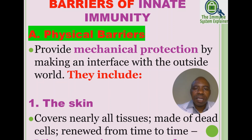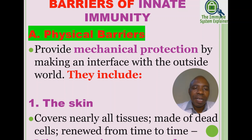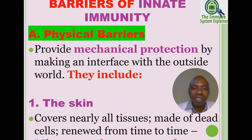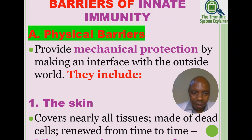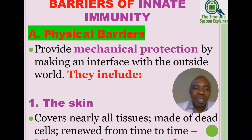Now let's begin the discussion about the barriers of innate immunity. The first umbrella term is physical barriers. Before a foreign antigen can be engaged by innate immune cells — such as macrophages, dendritic cells, neutrophils, basophils, eosinophils, natural killer cells, and mast cells — we have natural barriers in our bodies that we categorize into four groups.